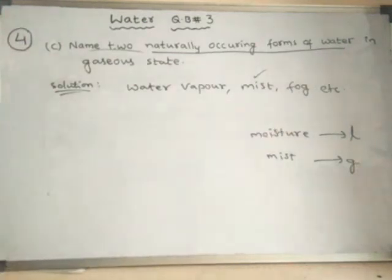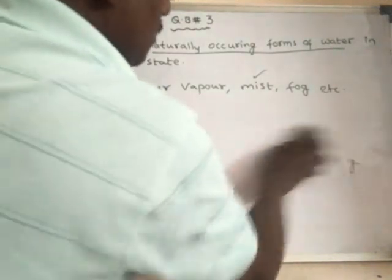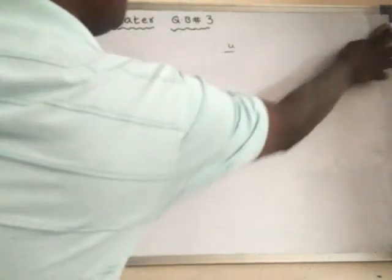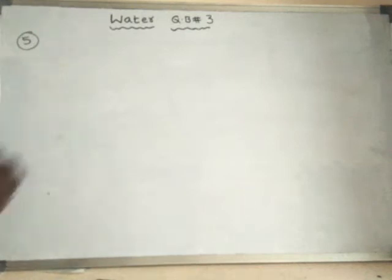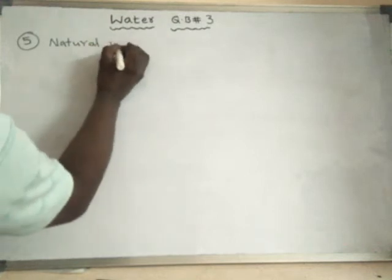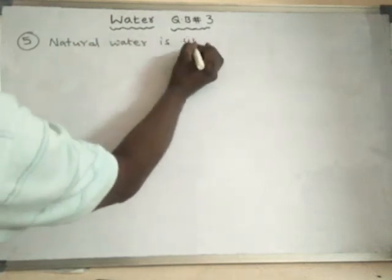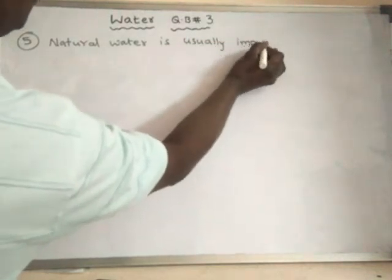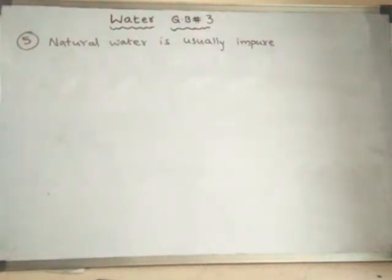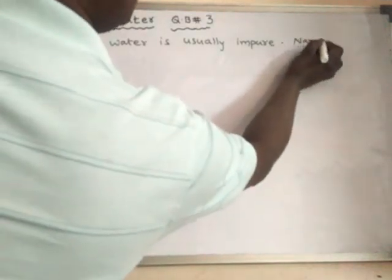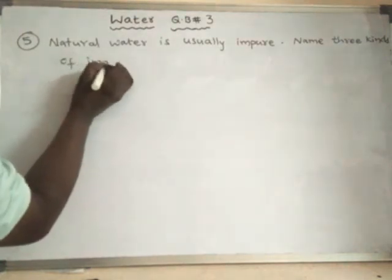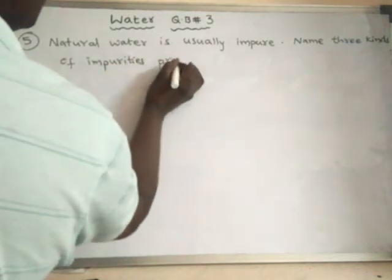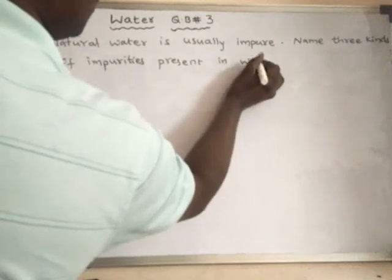Fog is also a gaseous form of water. Now we will go to the fifth question: natural water is usually impure — name three kinds of impurities present in natural water.